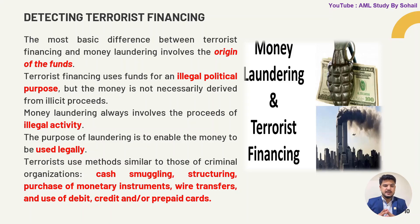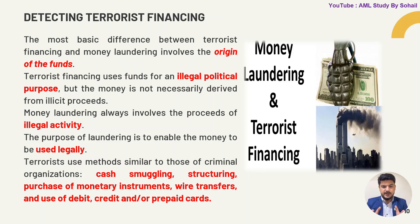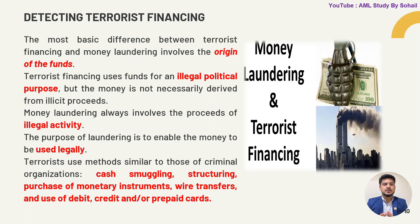Terrorists use methods similar to those of money launderers and organized crime. Both terrorist financing and money laundering can involve cash smuggling. They also use structuring, because they do not want any organization putting eyes on them. Other common methods include purchase of monetary instruments — if you want to know the types of monetary instruments, refer to previous lectures — as well as wire transfers, and the use of debit, credit, and prepaid cards.